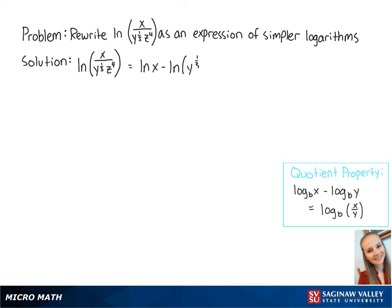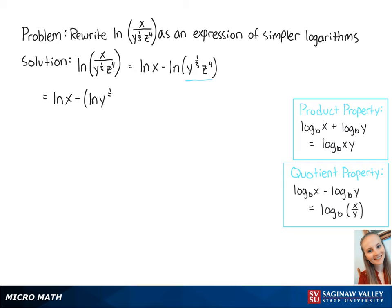Here we have multiplication, so next we're going to use the product property to rewrite this as the ln of x minus the ln of y to the 1/3rd power plus the ln of z to the 4th power.